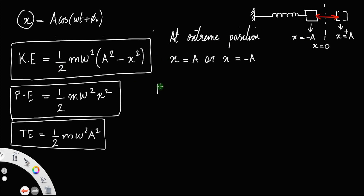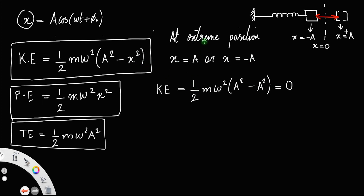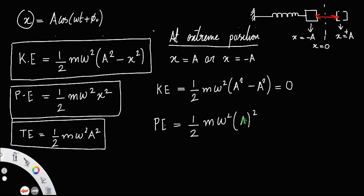At extreme positions, x = A or x = -A. Kinetic energy = ½mω²(A² - x²). If x = A, then A² - A² = 0, so kinetic energy = 0. For x = -A, it is also 0. So at extreme positions, kinetic energy is 0. Potential energy = ½mω²x² = ½mω²A², which is maximum.